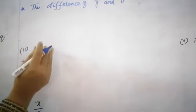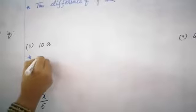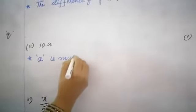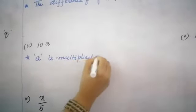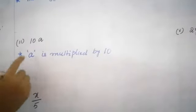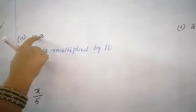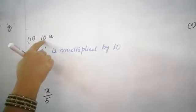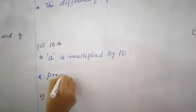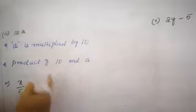The next expression is 10A. First statement: 10 is multiplied by A, or A is multiplied by 10. So the number comes first: 10 into A, that is 10A. One more statement: the product of 10 and A — 'into' is called product. So product of 10 and A gives 10 into A.